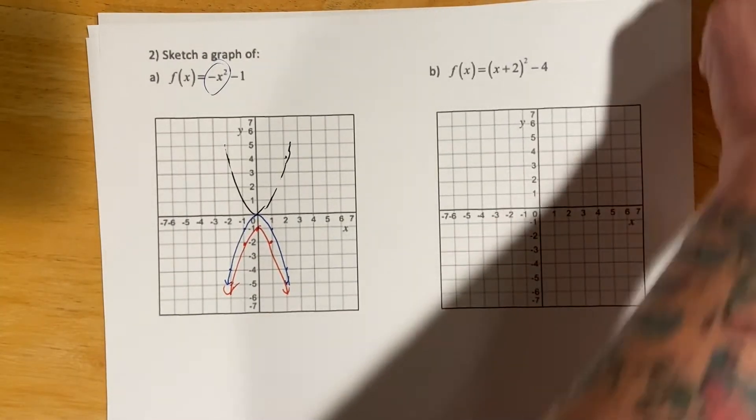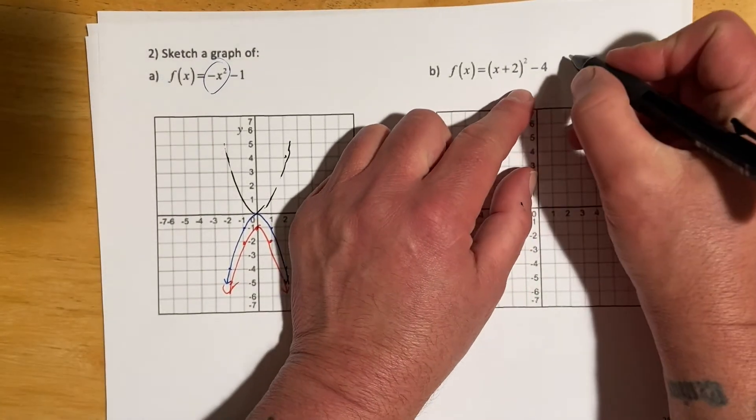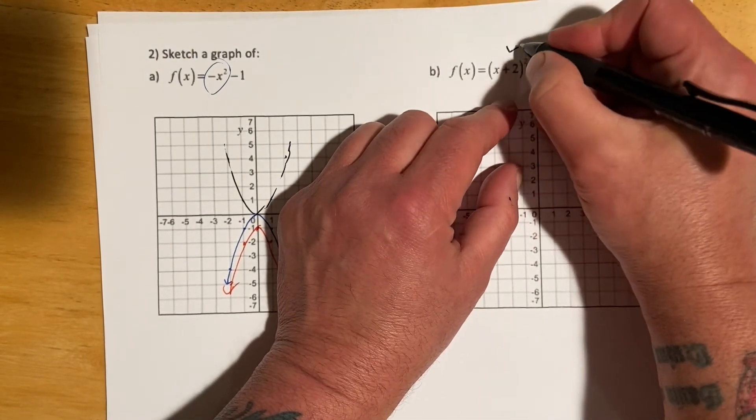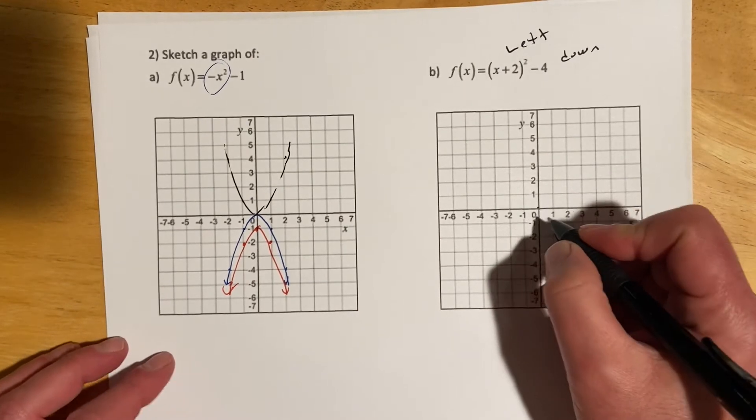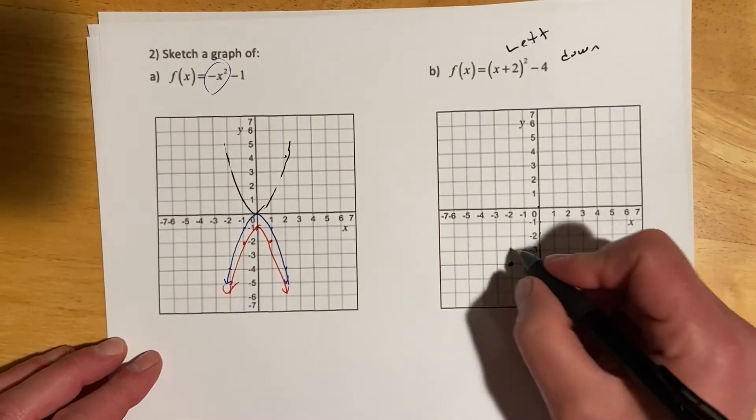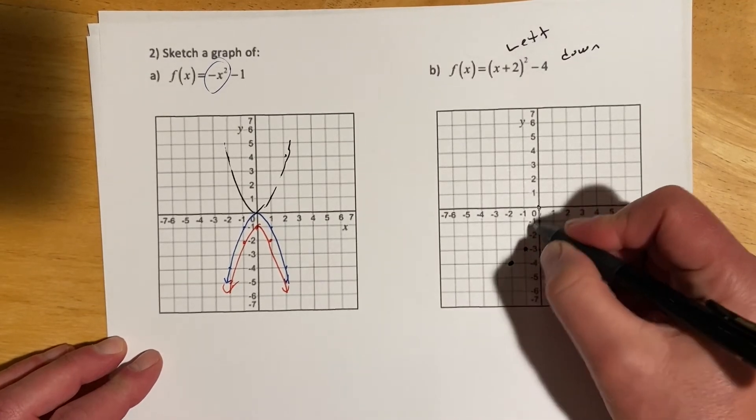And then over here we have, this one is going to be down four, and plus would be left two. So take our vertex and go down one, two, three, four, and left two. We'll start a new point, and then just copy the shape.